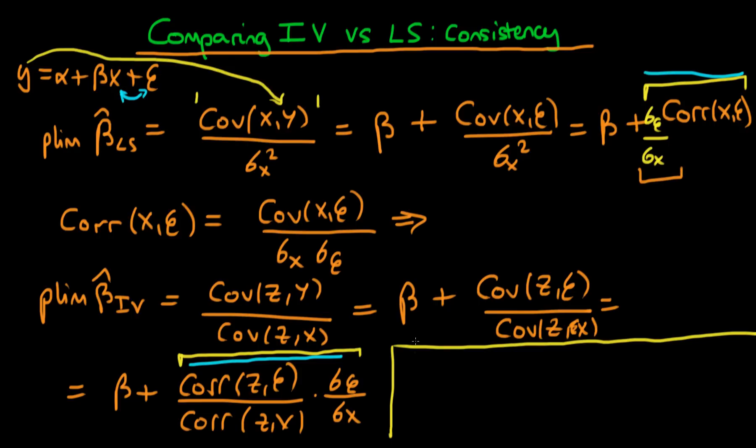We can just say that it's better to use IV estimators when the correlation of z with epsilon divided through by the correlation of z with x is less than the correlation of x with epsilon.